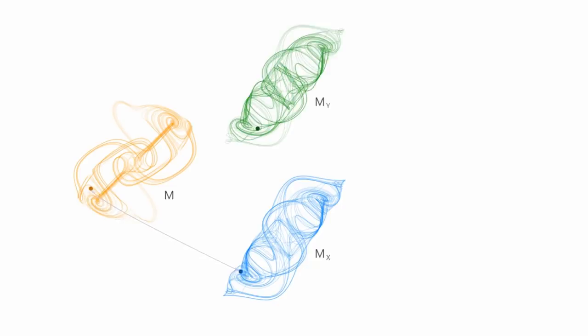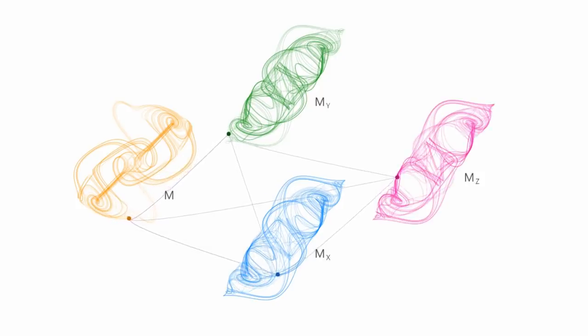The shadow attractor M_X maintains the topology of the original attractor M and is essentially a one-to-one mapping from M to M_X. If we also use time series Y to reconstruct another shadow version of the original attractor, we know that M_Y maps also one-to-one to M. Therefore, M_X and M_Y map one-to-one between themselves. The same can hold also with M_Z.